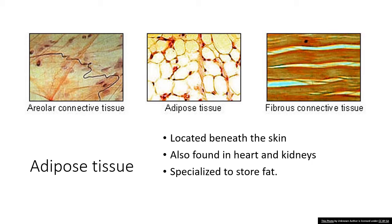Adipose tissue is found in the subcutaneous layer of skin, around the heart, around the kidney, in the yellow marrow of long bones, padding around joints, inside eye sockets, and posterior of the eyeball. It is a loose connective tissue primarily located beneath the skin, also found around internal organs such as kidney and heart. It is specialized for storage of fat, which acts as an energy source — when the body needs energy, fat stored in adipose tissue gets converted into carbohydrate and releases energy. Adipose tissue also provides insulation to the body by forming a thick layer of fat under the skin, and acts as a shock absorber for internal body organs.